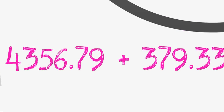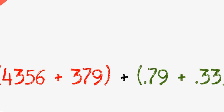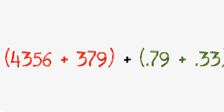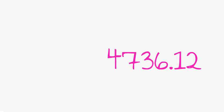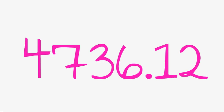Let's add 4356.79 with 379.33. Separate the numbers which gives you 4356 plus 379 and 0.79 plus 0.33. Add the decimals which gives you 1.12. Separate this number again which gives you 4356 plus 379 plus 1 plus 0.12. Add all the numbers together and the decimals which gives you 4736.12 as the answer.